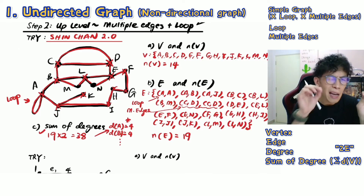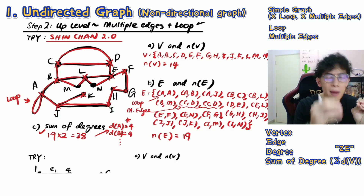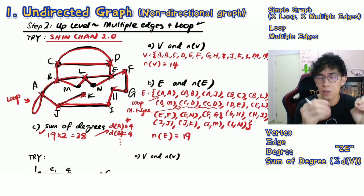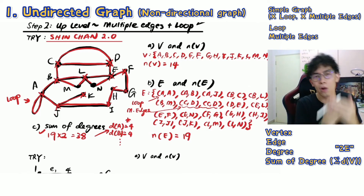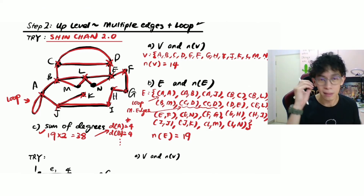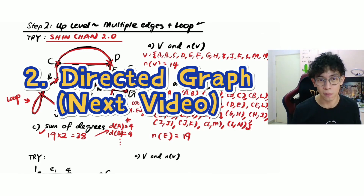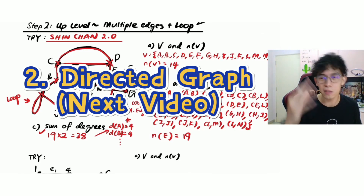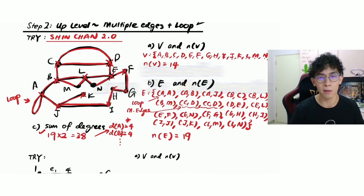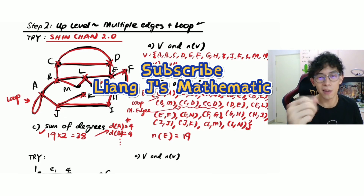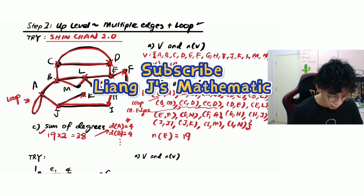We are now done with simple graphs — undirected — as well as loops and multiple edges. Now we're going to move into something called the directed graph. Come, let's go to the next part.